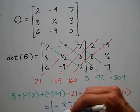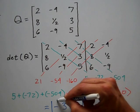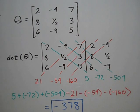And so that is the determinant of matrix Q: negative 378.